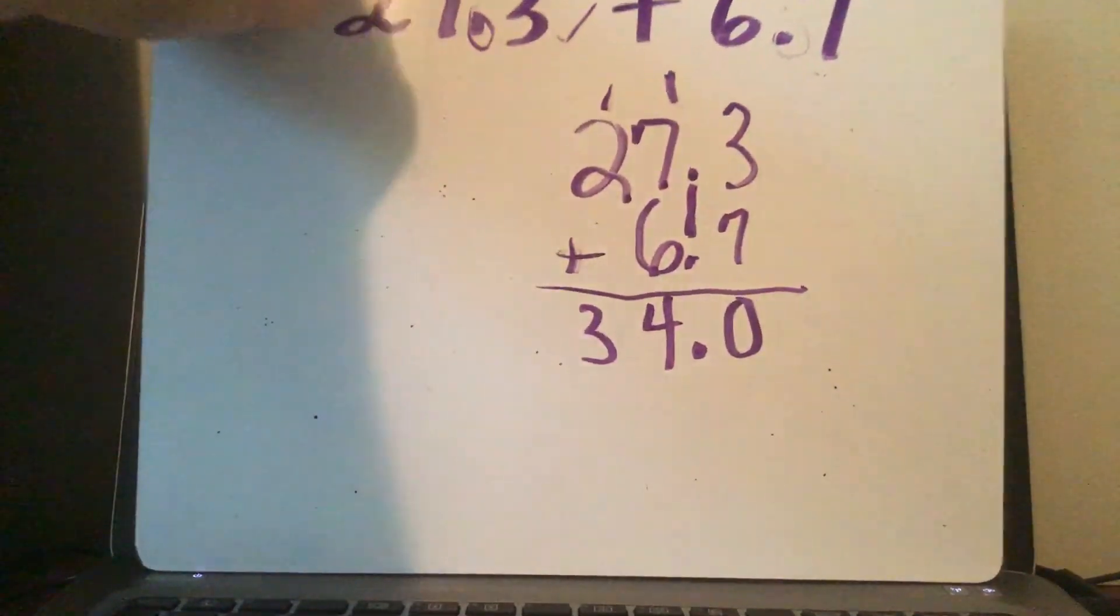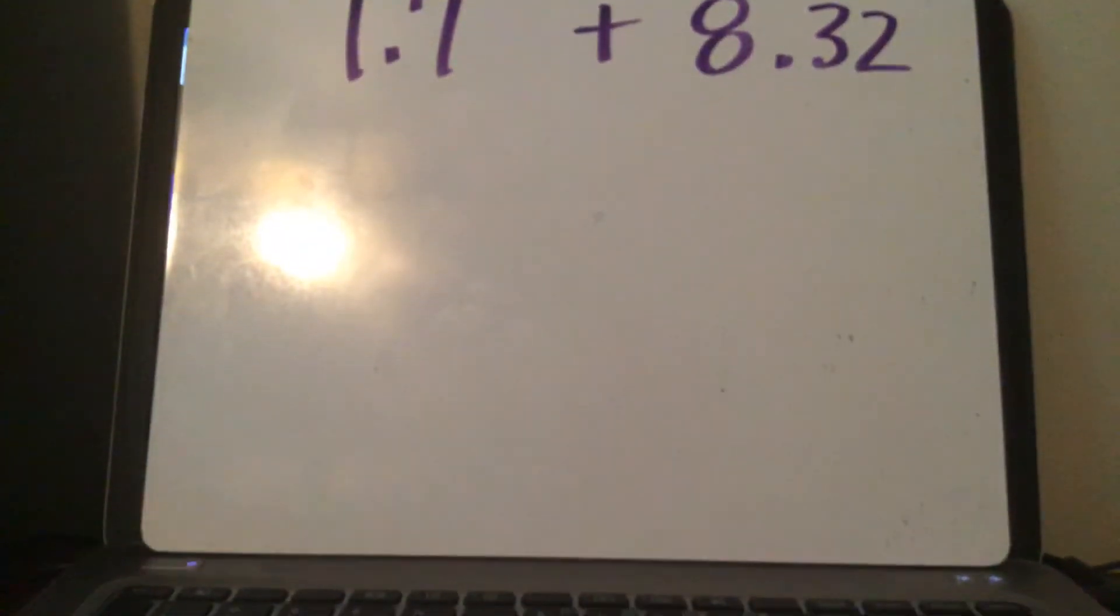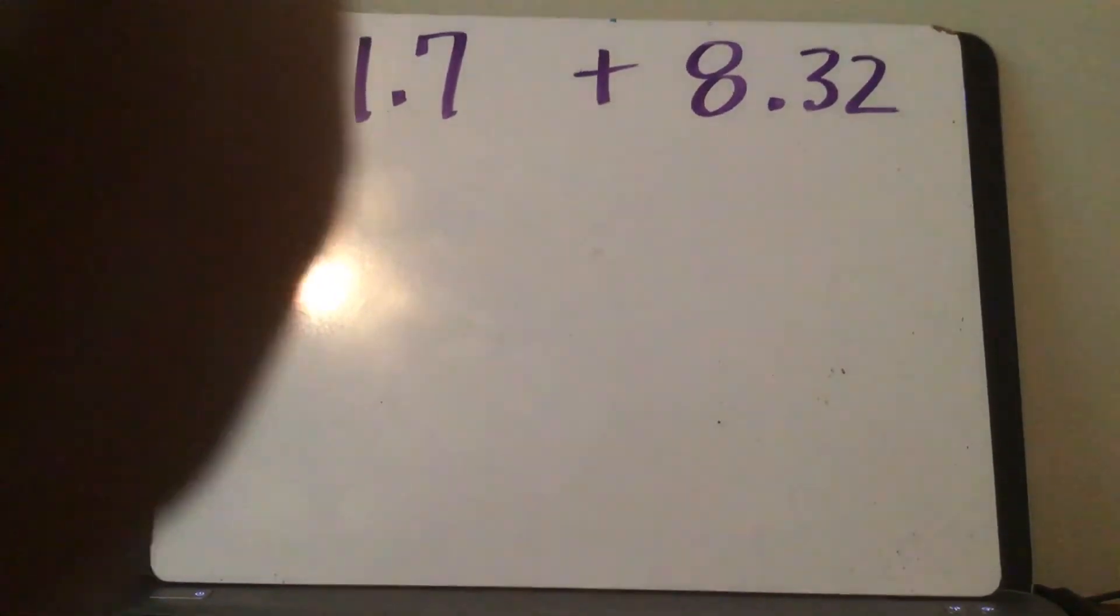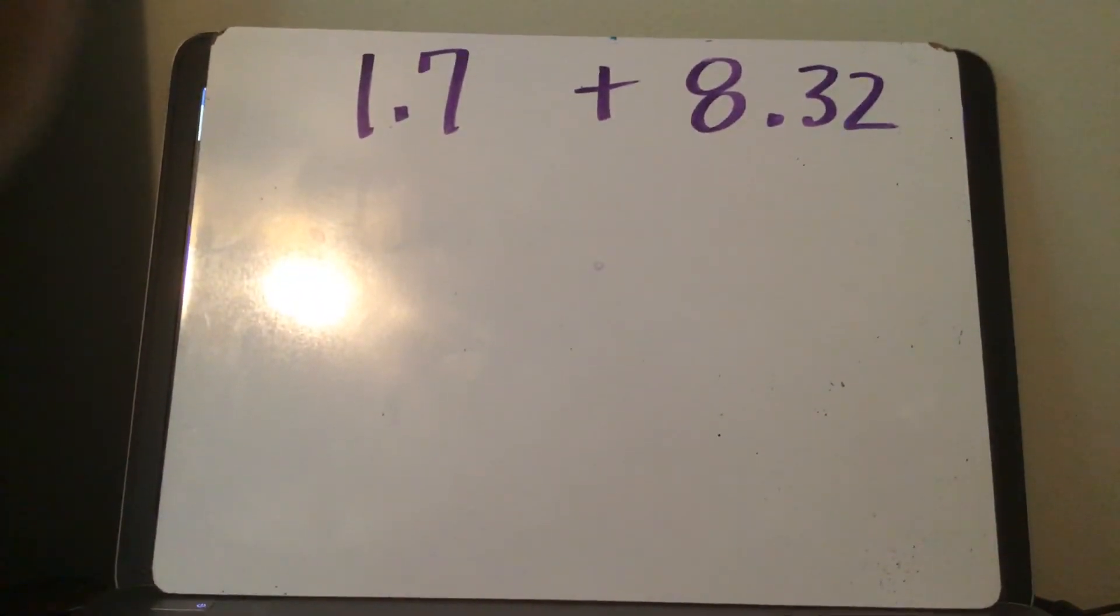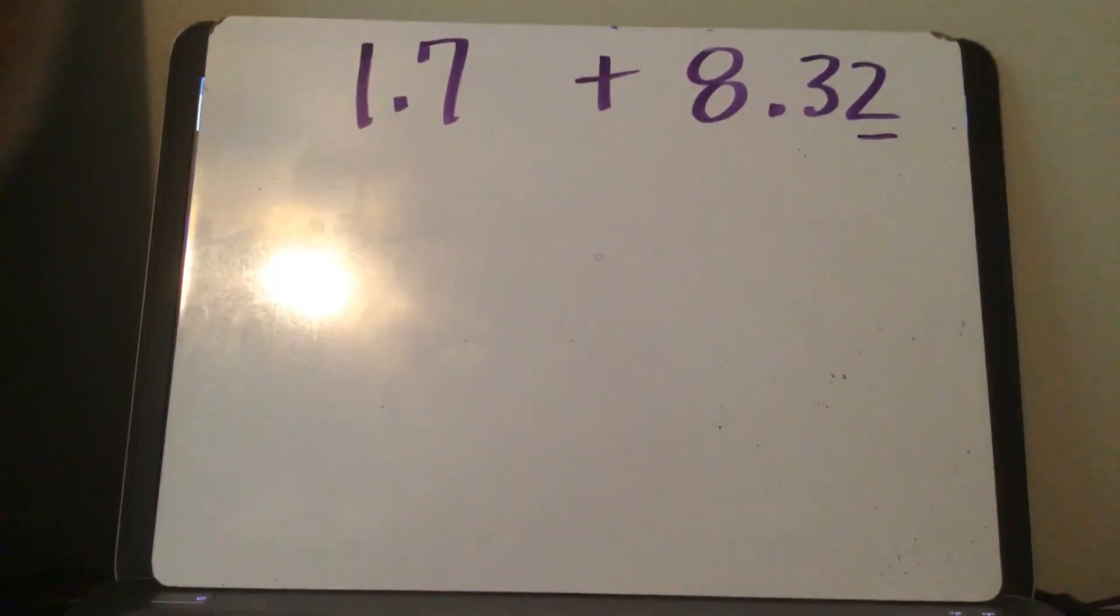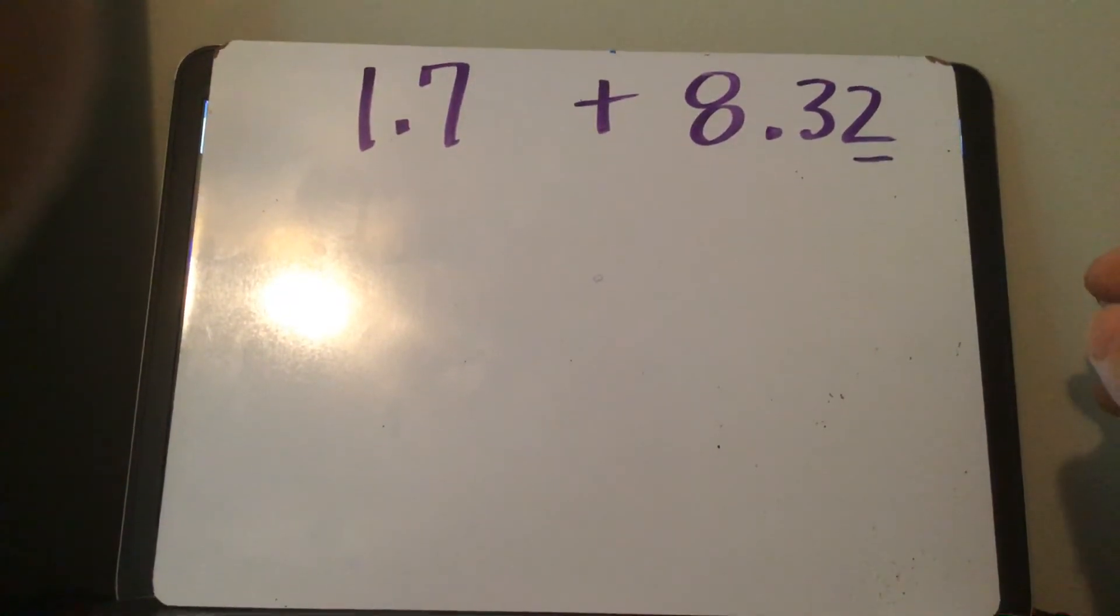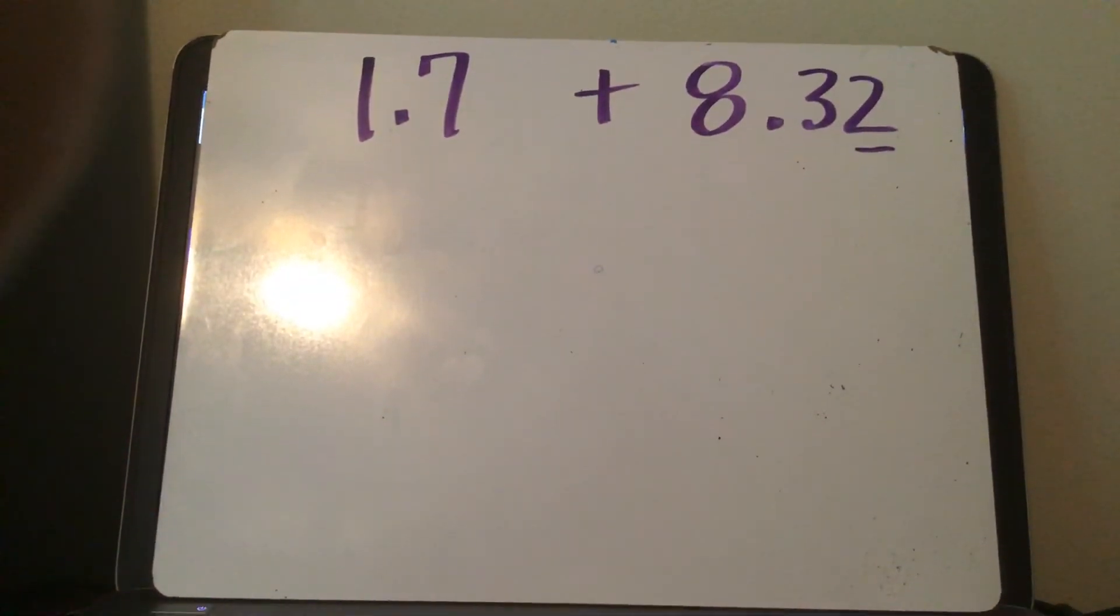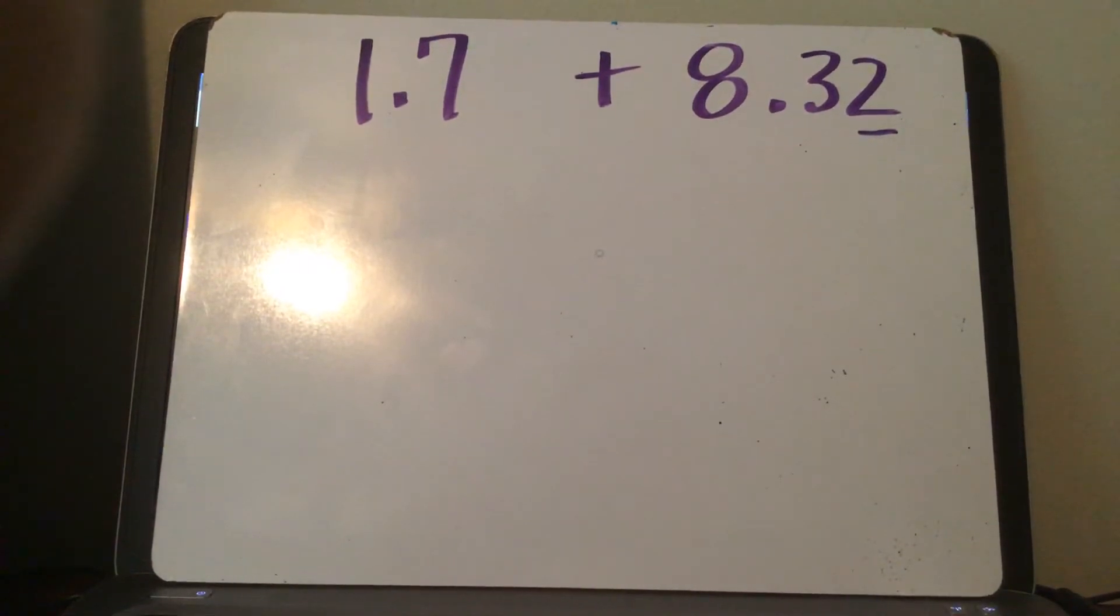Let's do another one. Here I have 1 and 7 tenths plus 8 and 32 hundredths. Don't get freaked out about that 2 right there—that's just the hundredths spot, it's no big deal. Which one of these is a larger number? Now I'm not talking about the longest number. Which one's the biggest whole number? Is it 1 or is it 8?